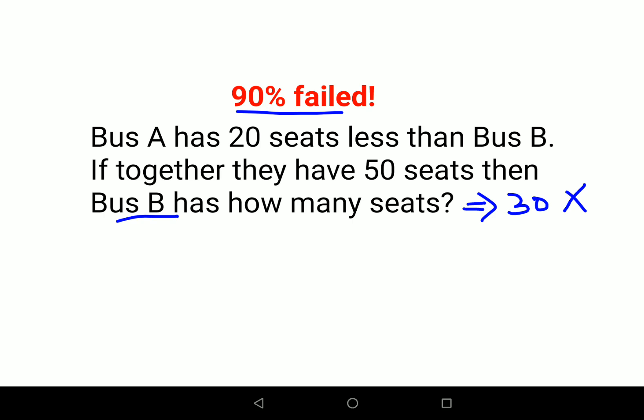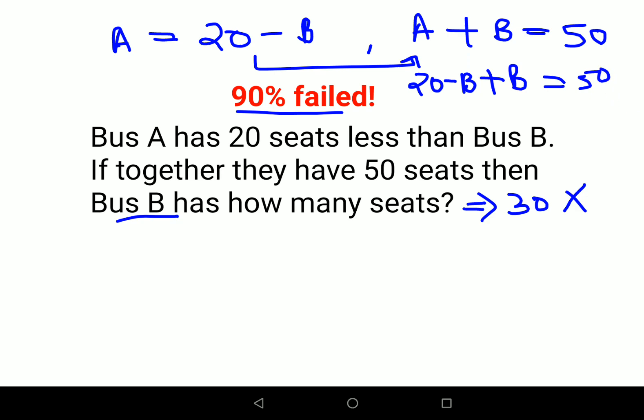Now the first thing where a lot of people made a mistake was they thought that A is 20 minus B. If you do that, the second equation is obviously A plus B equals 50. And instead of A, if you put this, what happens is 20 minus B plus B equals 50, and then they cancel the B and there is no variable left in the equation.